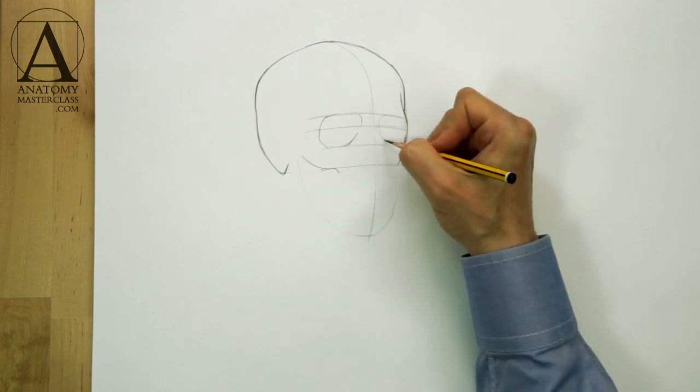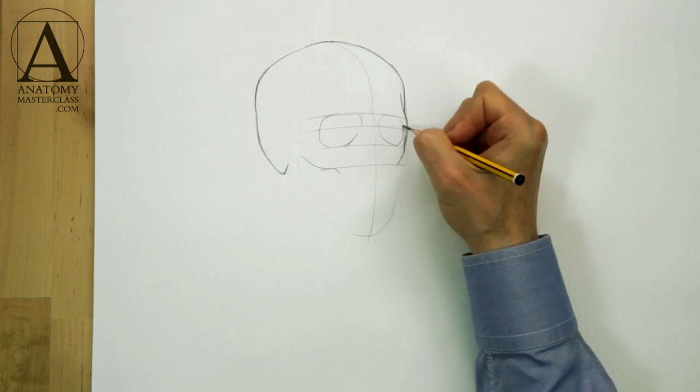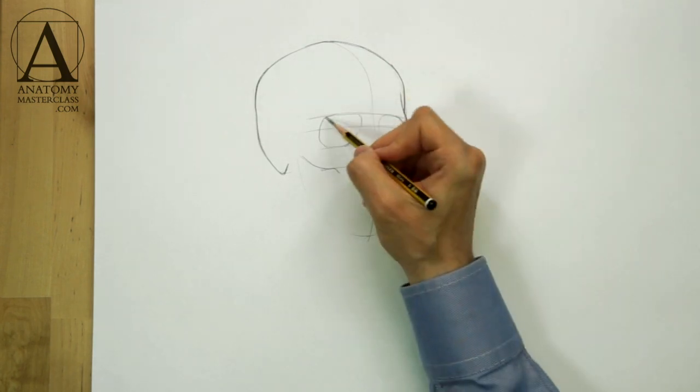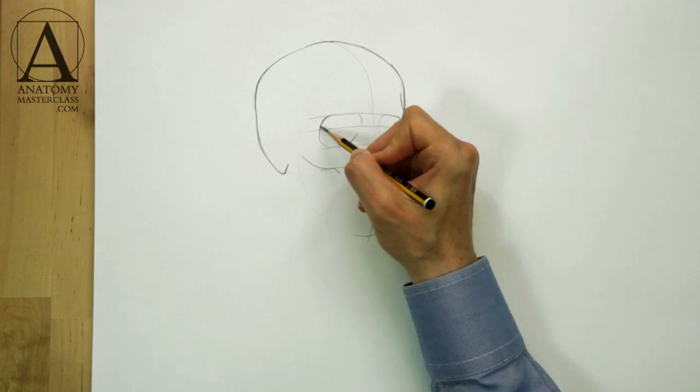The eye socket further from the viewer is foreshortened and therefore appears to be slightly smaller than the one that is closer to us.